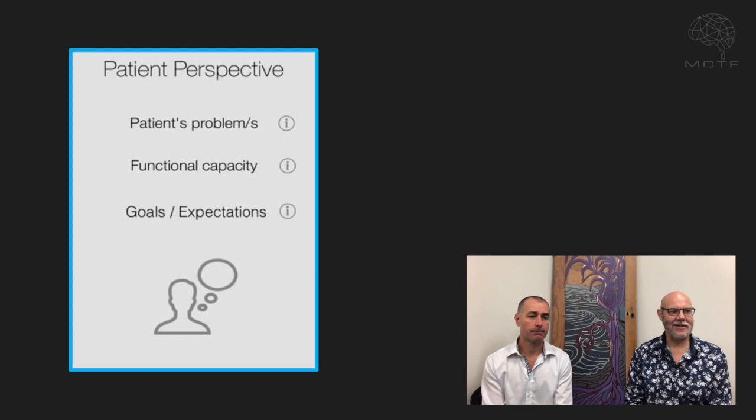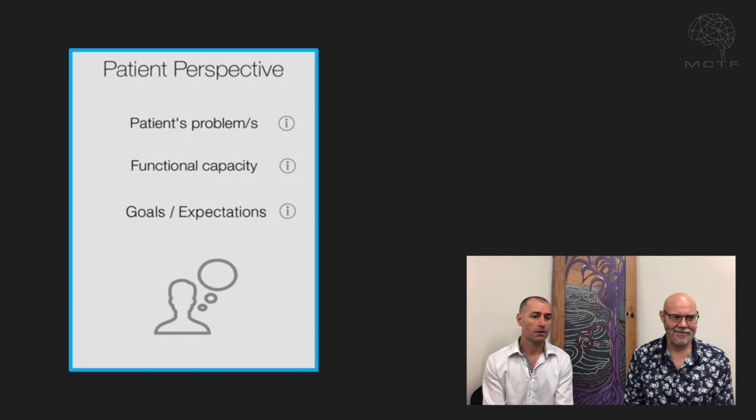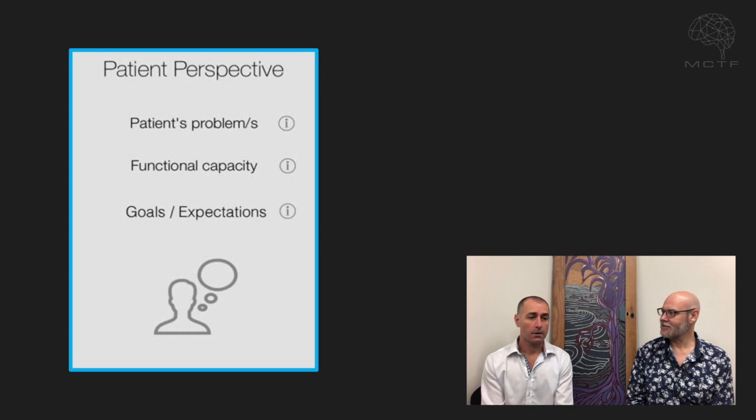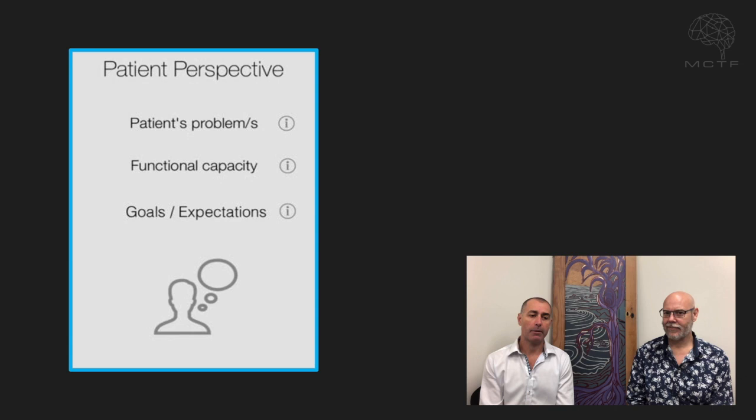Patient perspectives — we have three areas: the patient's problem, functional capacity, and goals and expectations. This part of the framework is aligned to the World Health Organisation definitions. It fits to the ICF — the International Classification Framework — which is broadly accepted in healthcare, and we've used those three labels to break it down a little bit.